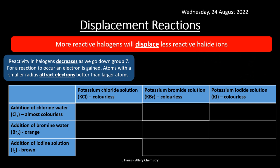Fluorine at the top of the periodic table is a very small atom with little shielding — it can readily accept an electron to achieve a full outer shell. As we go down the group to chlorine, bromine, and iodine, the atom becomes much larger, there's more shielding, and the ability to take an electron weakens.